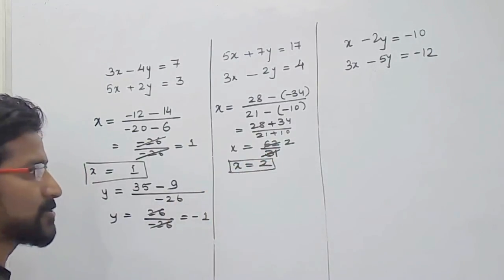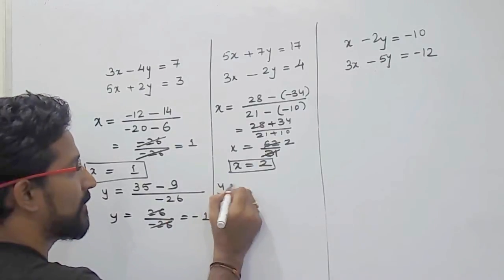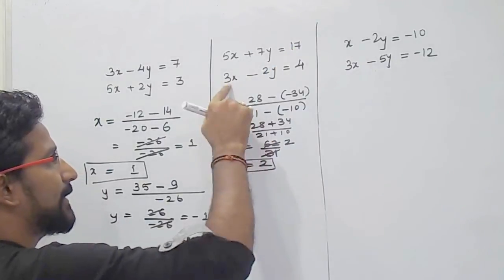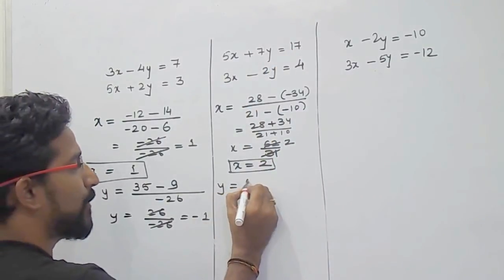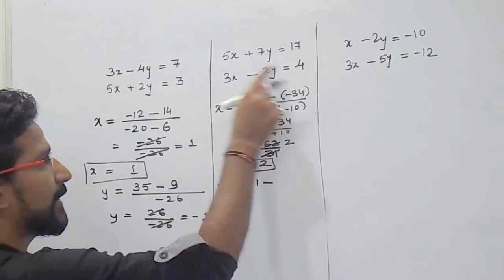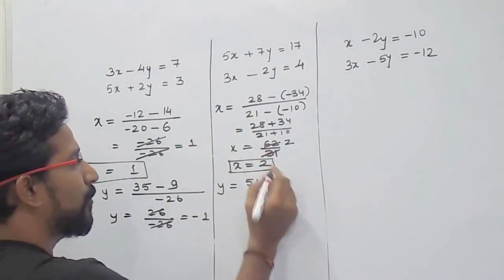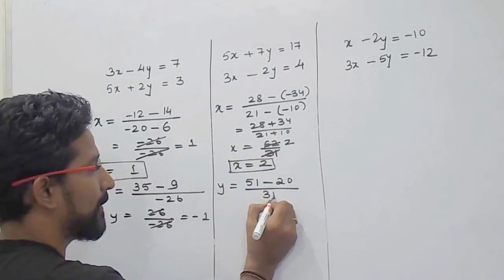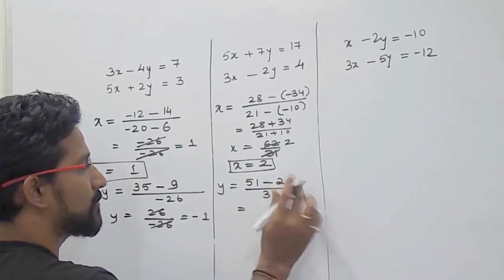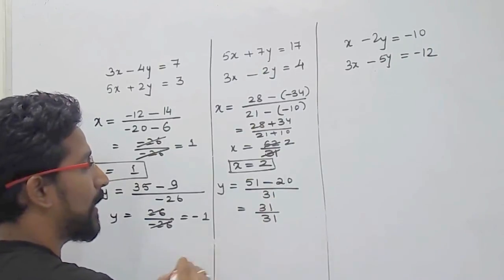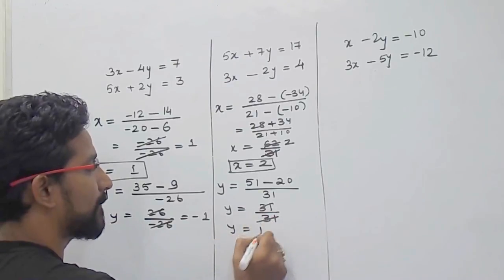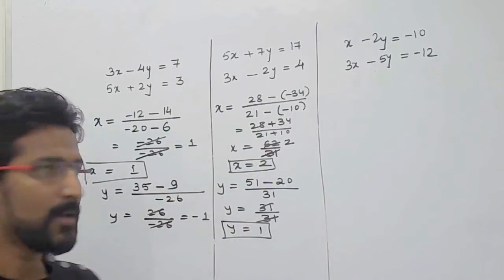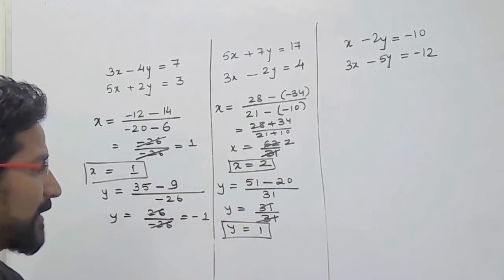Now for y: cross-multiply 17 into 3, which is 51, minus 5 into 4, which is 20, divided by the same denominator 31. So 51 minus 20 is 31, divided by 31, giving y equals 1. The solution of these equations is x equals 2 and y equals 1.